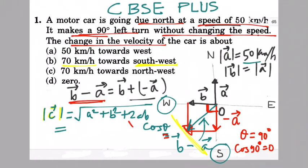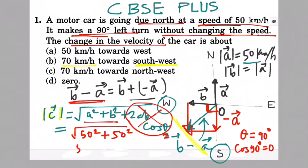That's why 2ab cos θ, this term will be cancelled because it is 0. So we'll have to focus only on a² and b², which is 50², so 50² plus 50², which is 50√2.